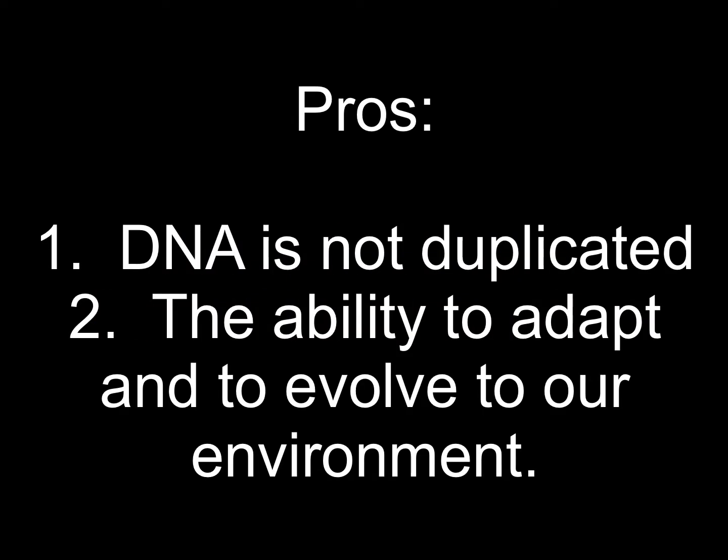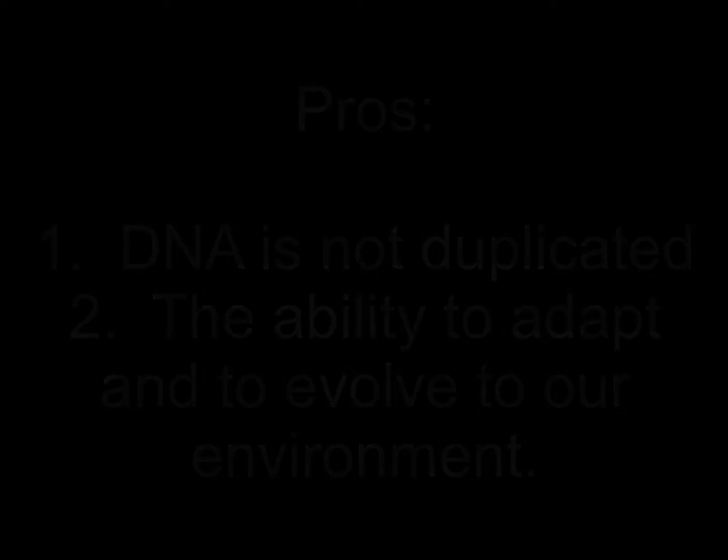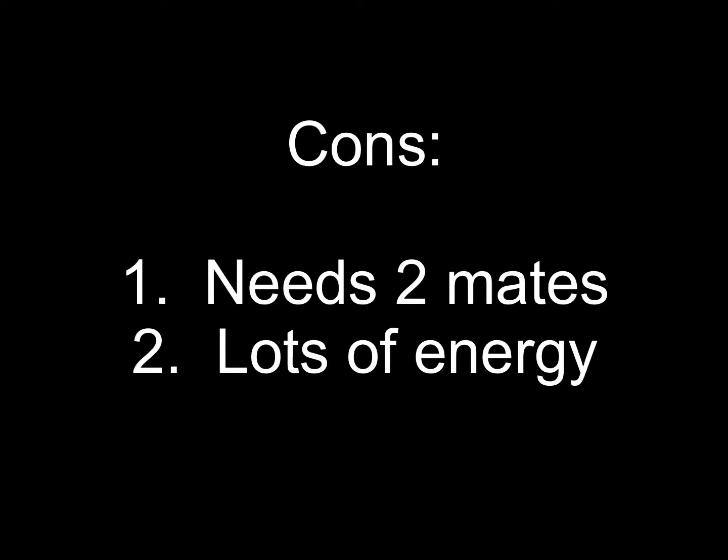The second method is sexual reproduction. Some pros are that the DNA is not duplicated, which allows the ability to adapt and evolve to the environment. On the other hand, it needs two mates and has to use lots of energy.